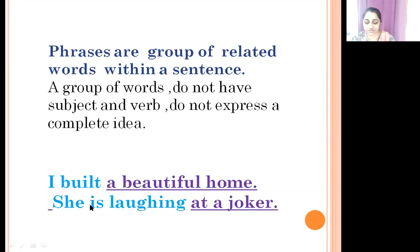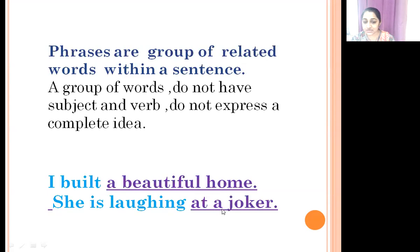Here, 'she' is the subject and 'is laughing' is the verb. 'At a joker' — does it have a subject? No. Does it have a verb? No. Does it have a group of words? Yes. So it is a phrase. 'At a joker' is a phrase.